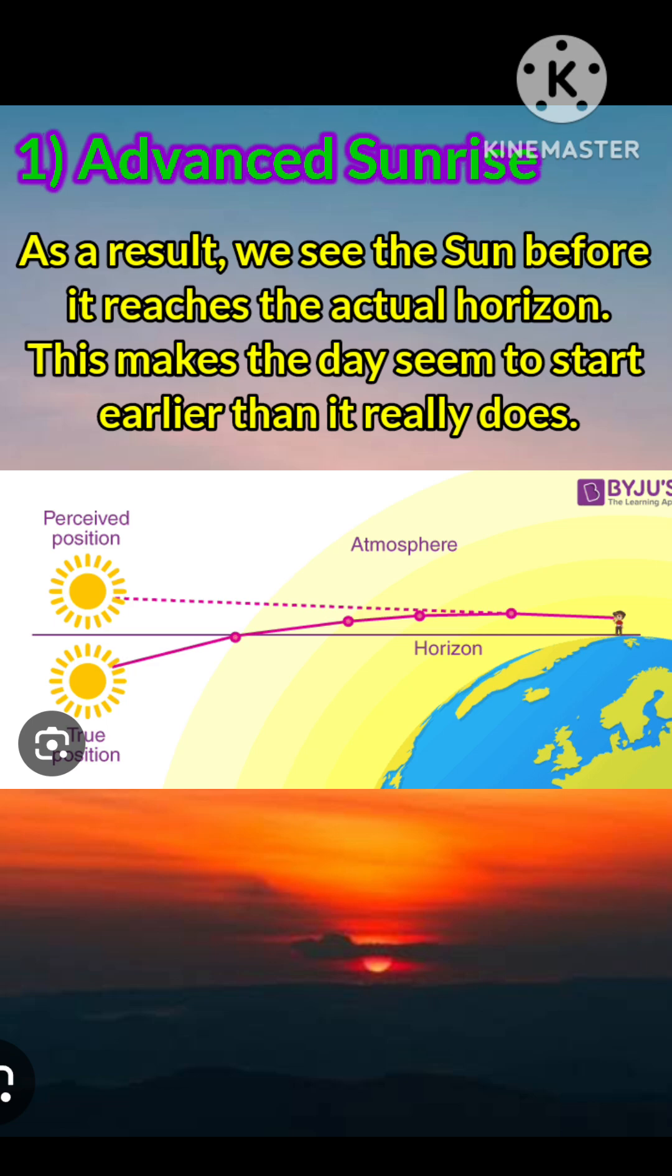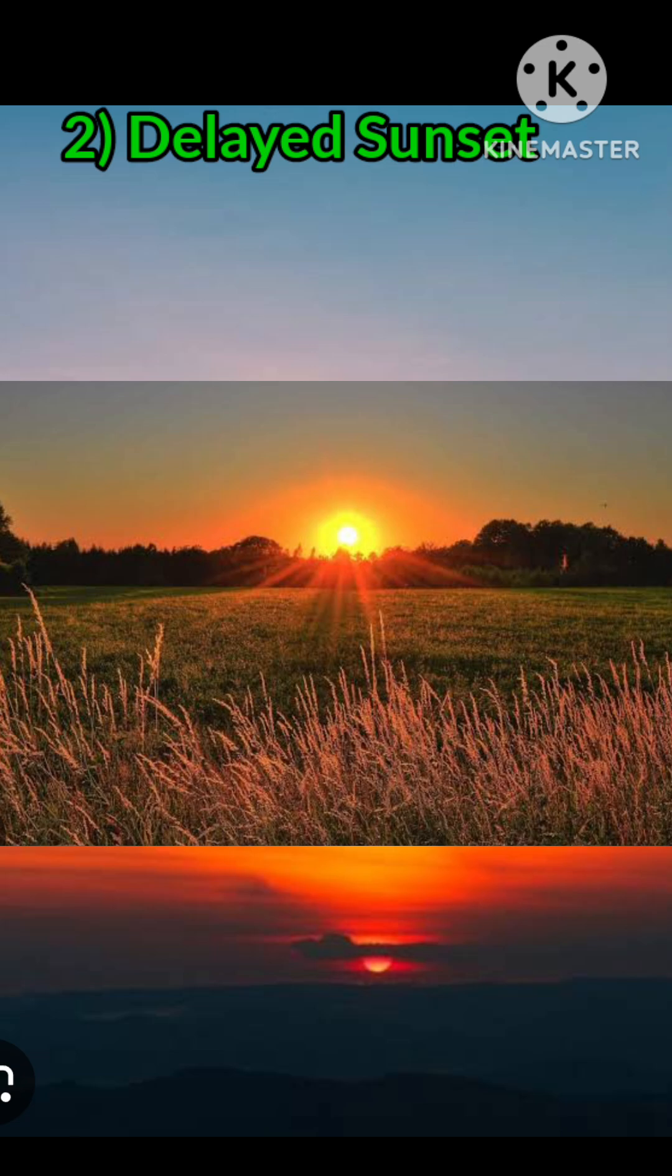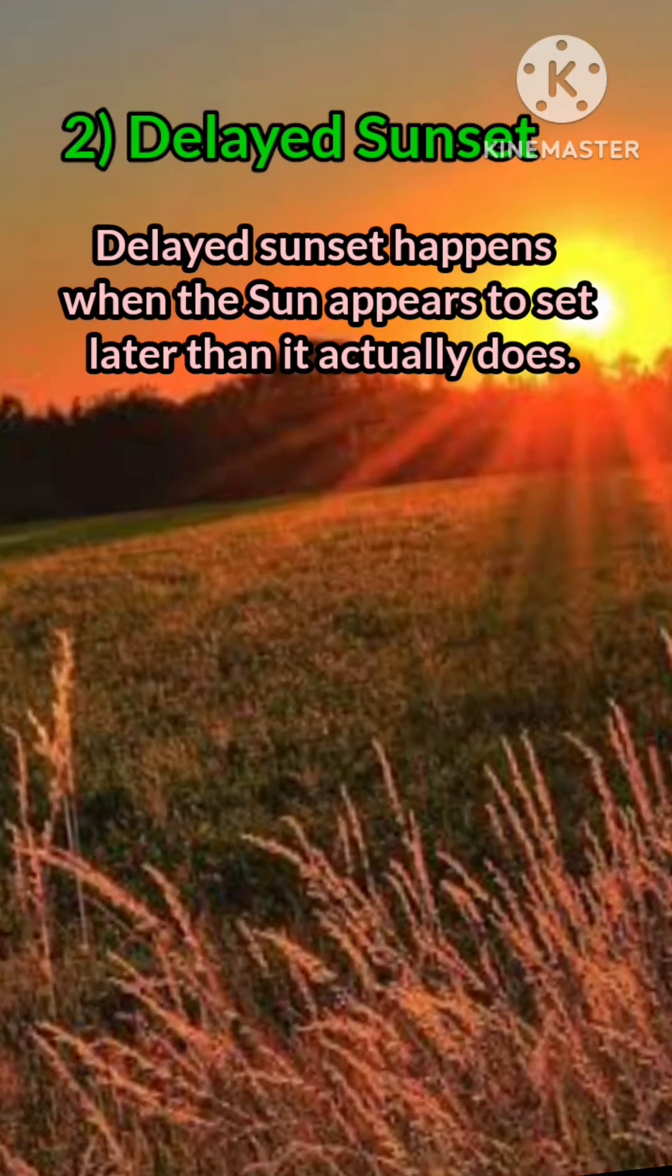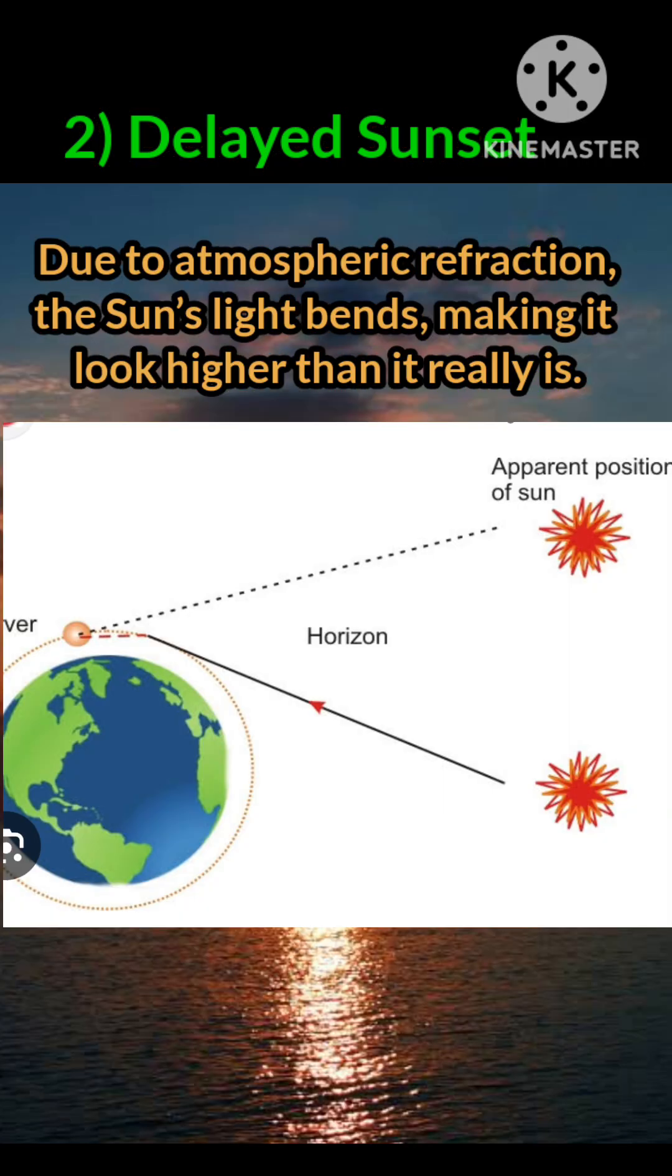Delayed sunset happens when the sun appears to set later than it actually does. Due to atmospheric refraction, the sun's light bends, making it look higher than it really is.